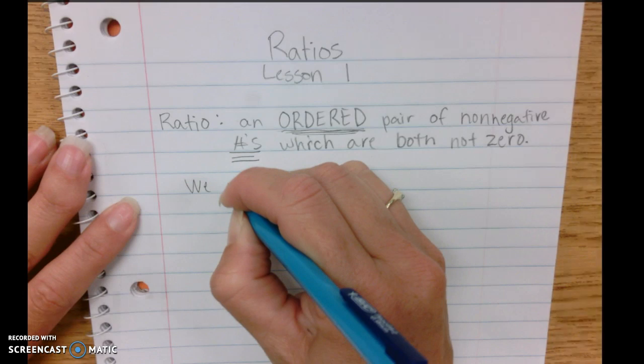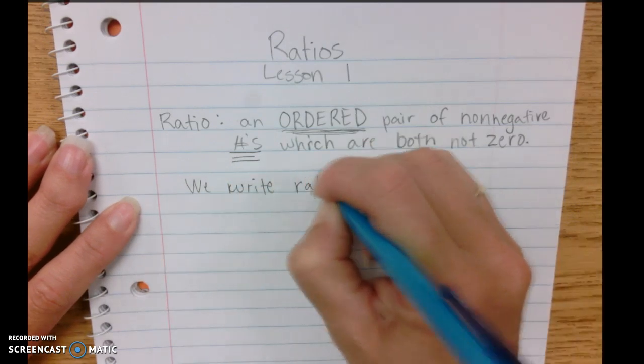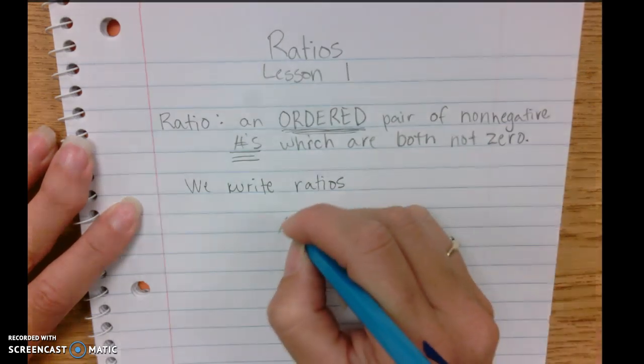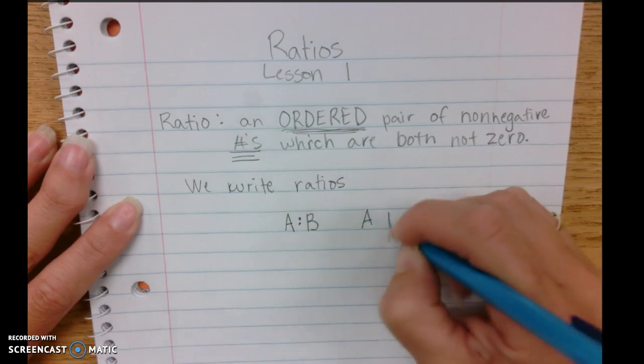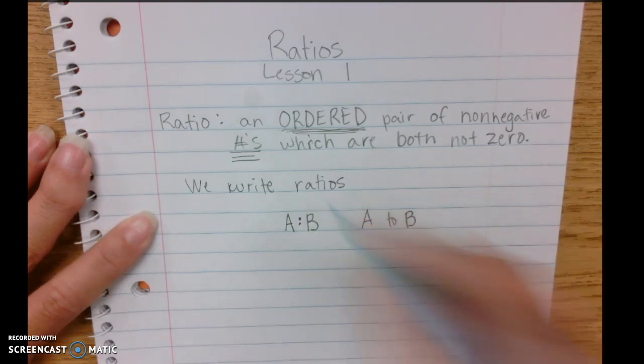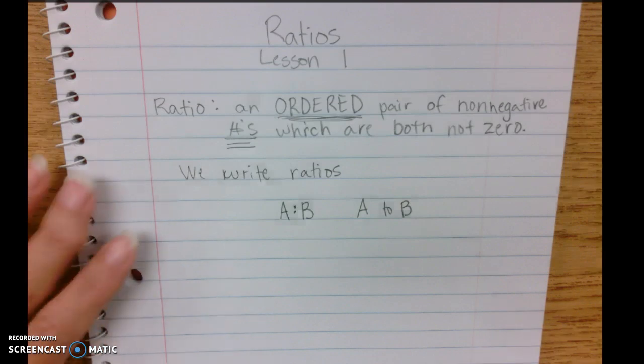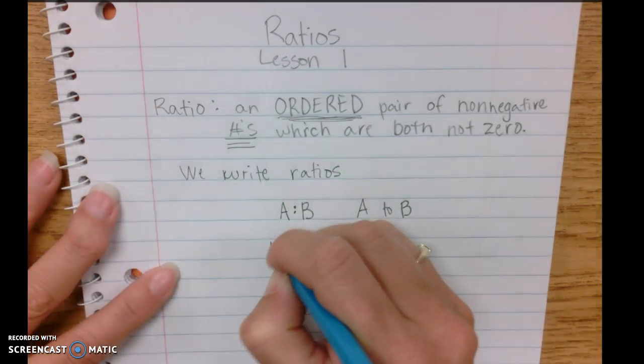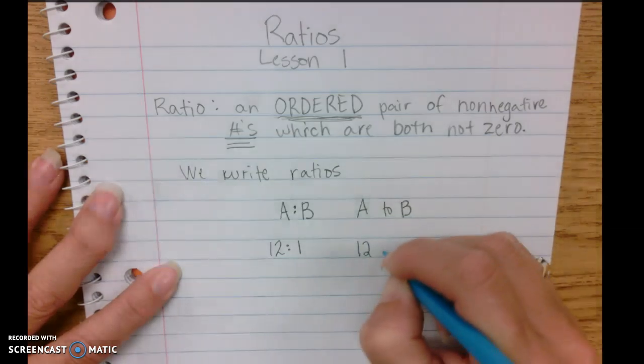So we write these two different ways: it can be A colon B or A to B. An example in real-life context would be the relationship of months to years. We have 12 months for every one year, or 12 to one.